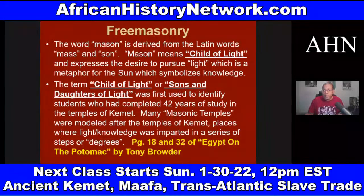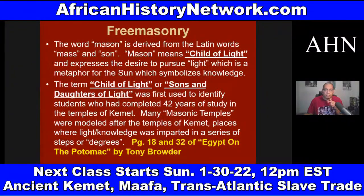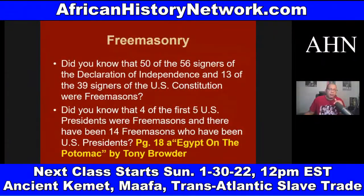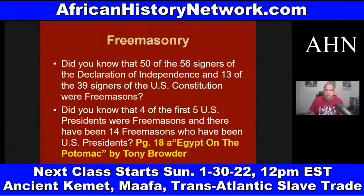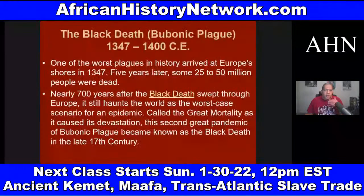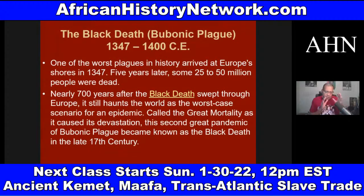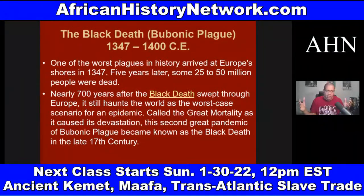Check out pages 18 and 32 of 'Egypt on the Potomac' by Tony Browder. Fifteen of the 56 signers of the Declaration of Independence were Freemasons, and 13 of the 39 signers of the U.S. Constitution were Freemasons as well. We also deal with the Black Death — the bubonic plague — which hit Europe in spurts from 1347 to 1400, causing Europe to lose between one quarter and one third of its population.